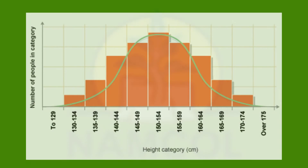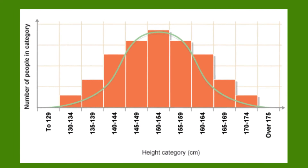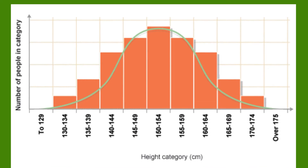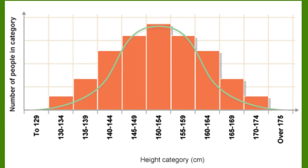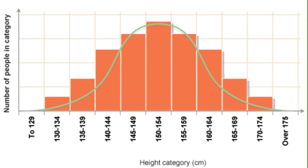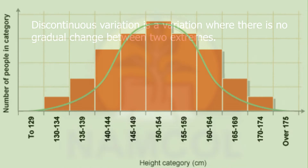A histogram is the best graph used to represent continuous variation. Take note that the histogram on the screen does not have spaces between the bars — the bars are attached, showing a smooth gradation between the individual heights.